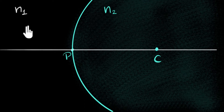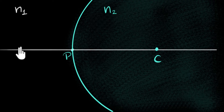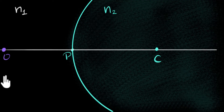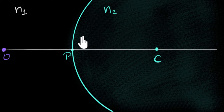The question we're going to tackle is: if we keep an object somewhere over here, where will its image be after refraction? That's what we're going to find out. So here's the object. To figure out the image, we have to draw — no surprise — ray diagrams. So let's draw a bunch of rays coming from this object towards this surface.